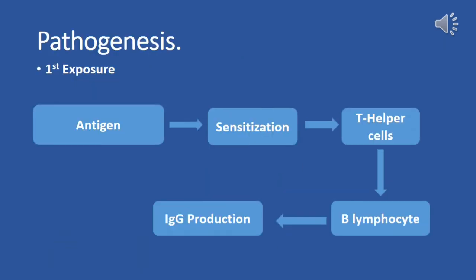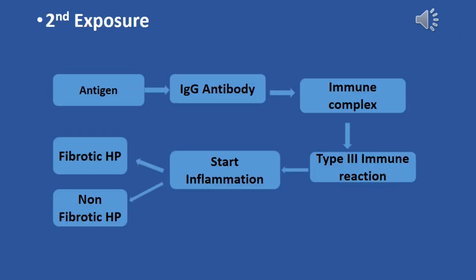In hypersensitivity pneumonitis, antigen-presenting cells capture the antigen and present it to T-helper cells. The T-helper cells then activate B lymphocytes, which produce IgG antibodies specific to the antigen. These antibodies mark the antigen for destruction. When exposed to the antigen for the second time, the antigen binds with the antibody and forms antigen-antibody complexes, triggering a type 3 immune response.